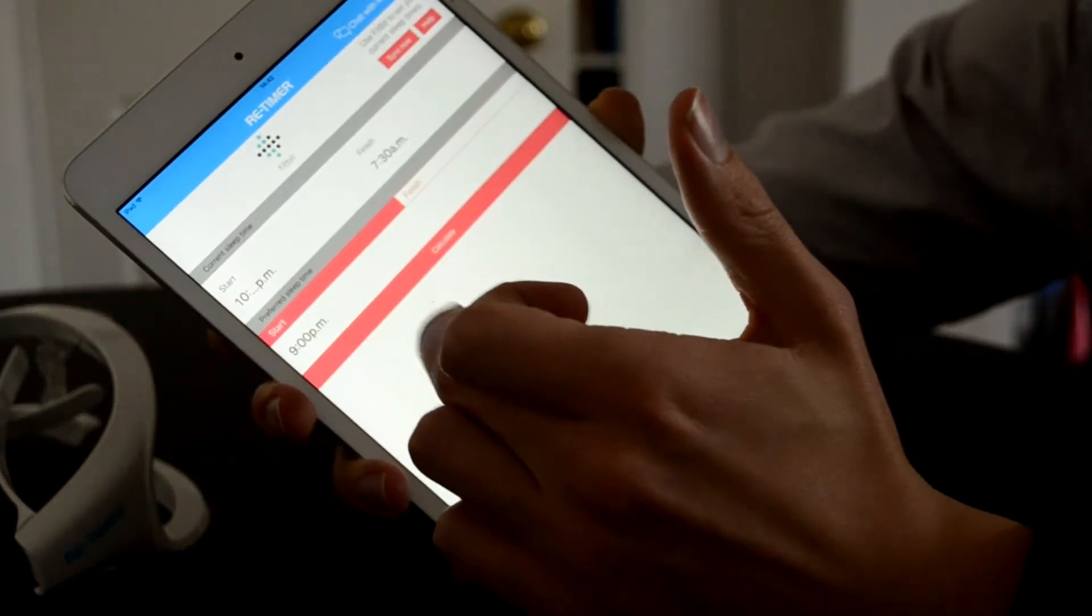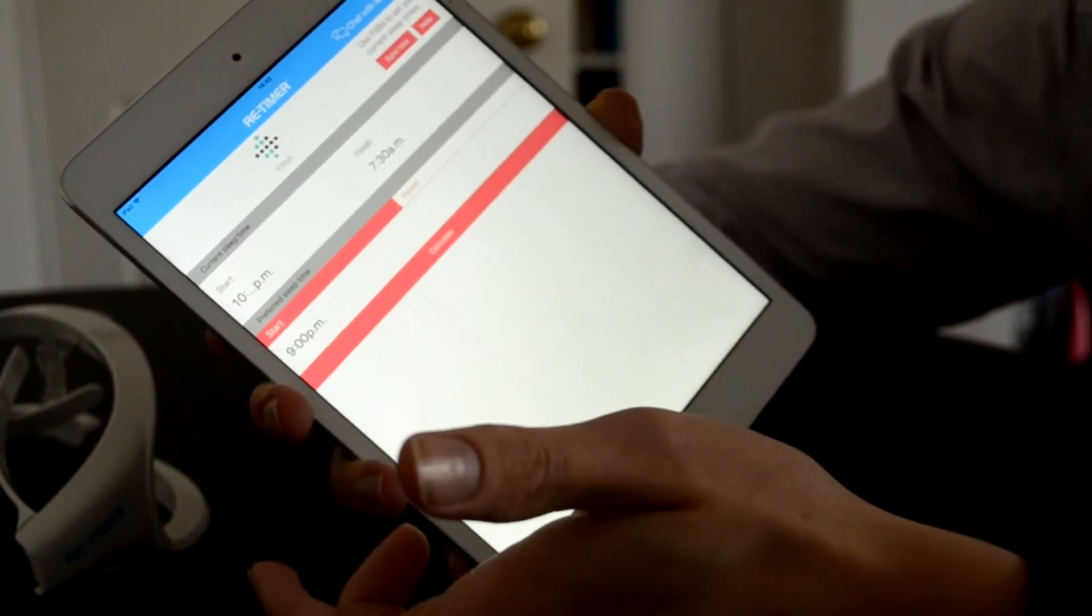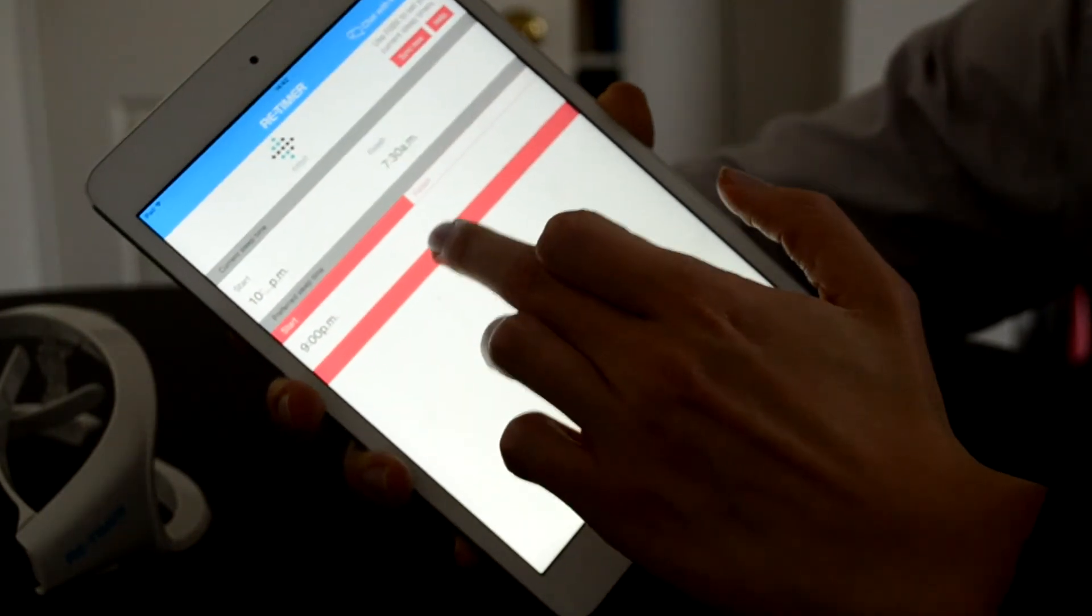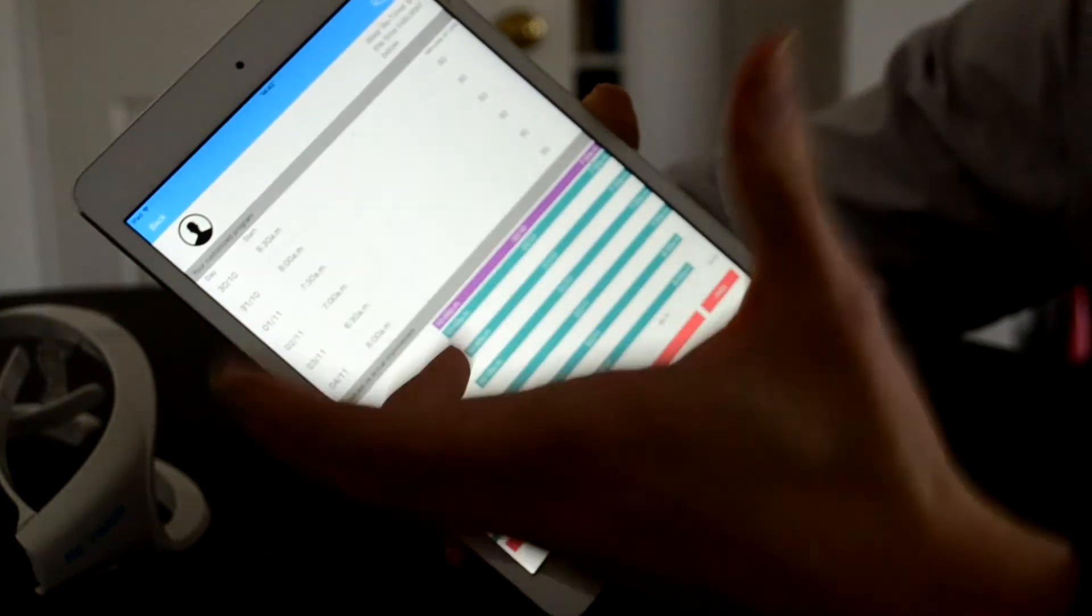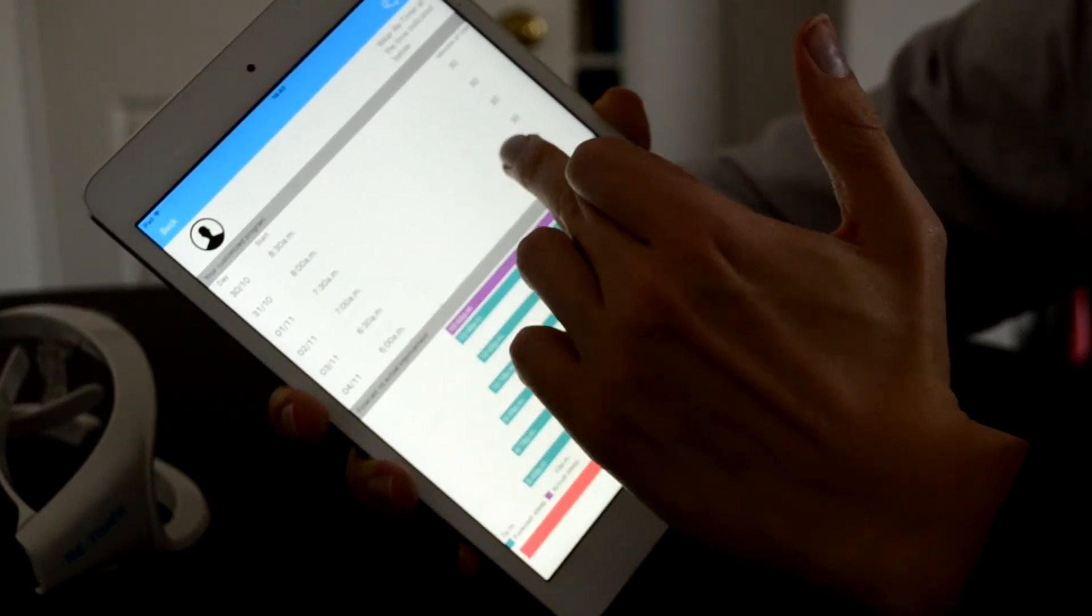You can put in the time that you would prefer to fall asleep. So, say I wanted to start falling asleep at 9pm instead. Then I can just hit calculate. And it will build me a custom program of when I should be wearing it and what times I should be getting up.